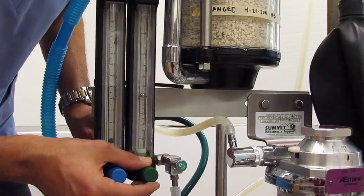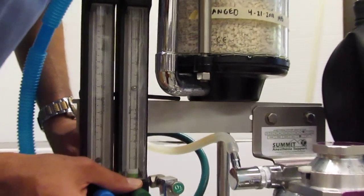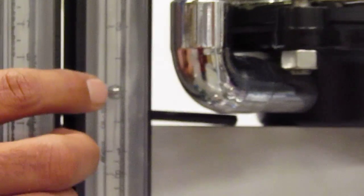Now notice, I know I can read my flow meter via that little ball that's in there and I read the flow meter by where we are in the center of the ball. So right there, I am at two liters of oxygen per minute.